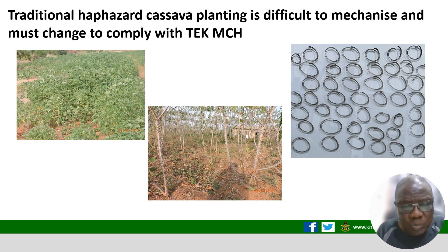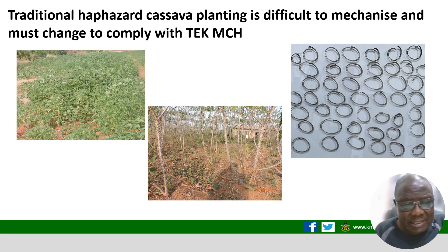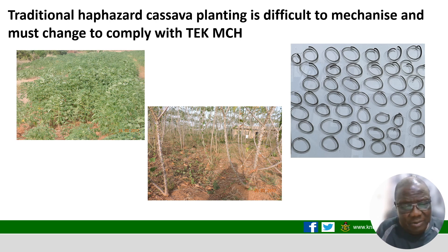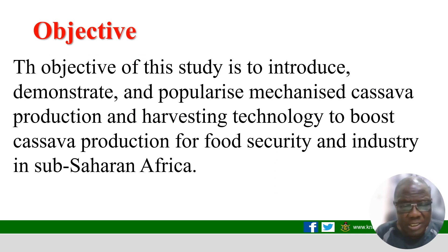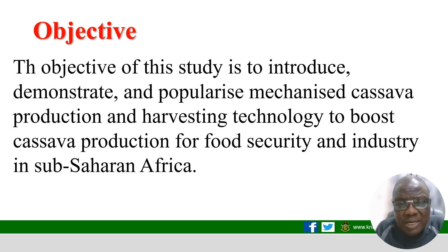This slide is talking about the traditional haphazard planting of cassava which makes it difficult to mechanize. You can see the way cassava is planted is a major challenge to mechanical cassava harvesting and production. The objective of my study is to introduce, demonstrate, and popularize mechanized cassava production and harvesting technology to boost cassava production for food security and industry in sub-Saharan Africa.